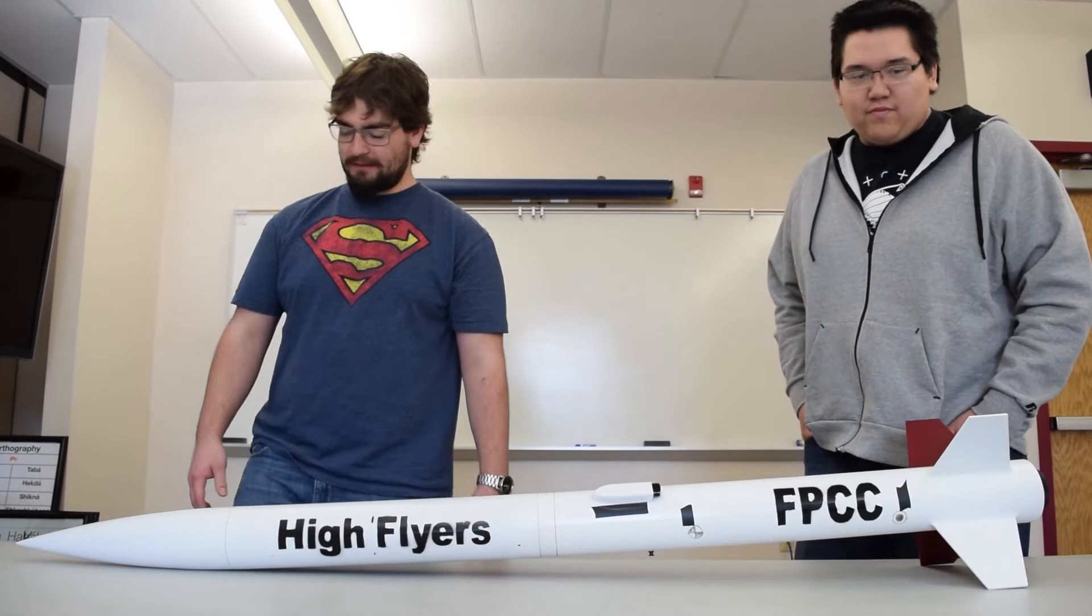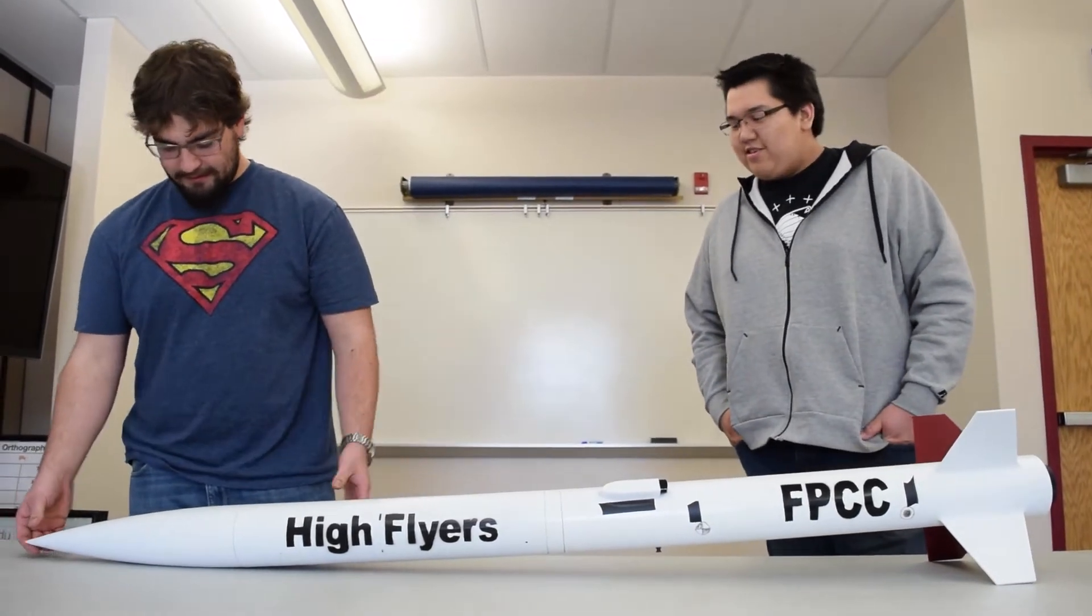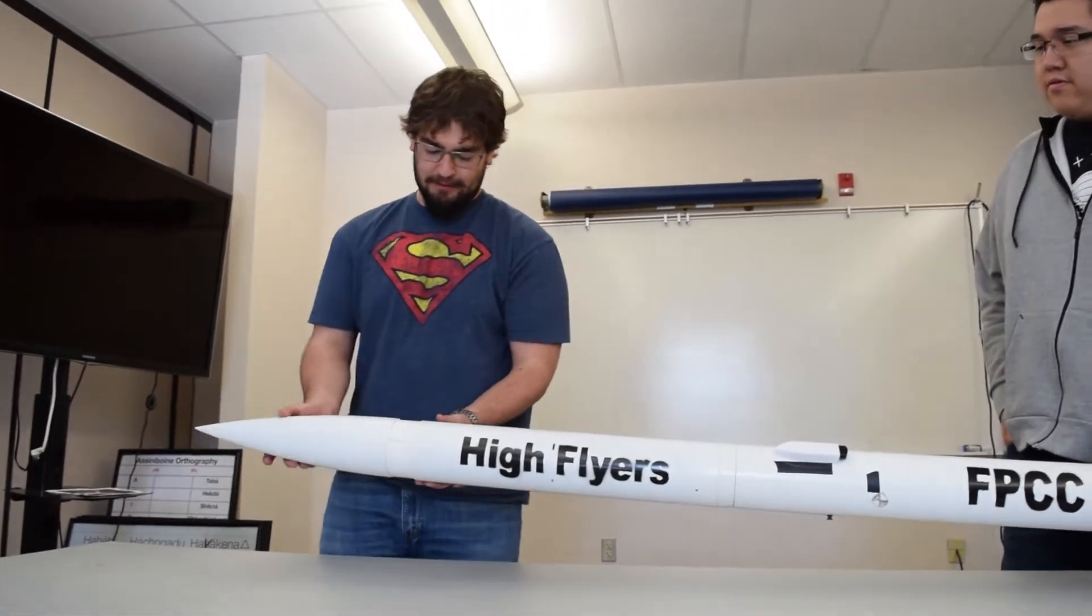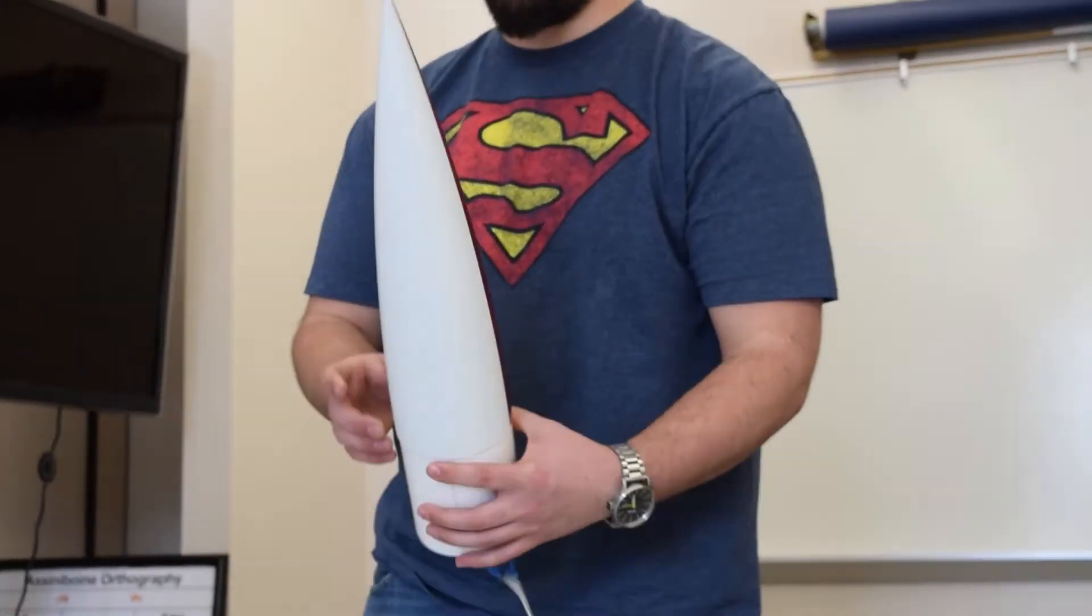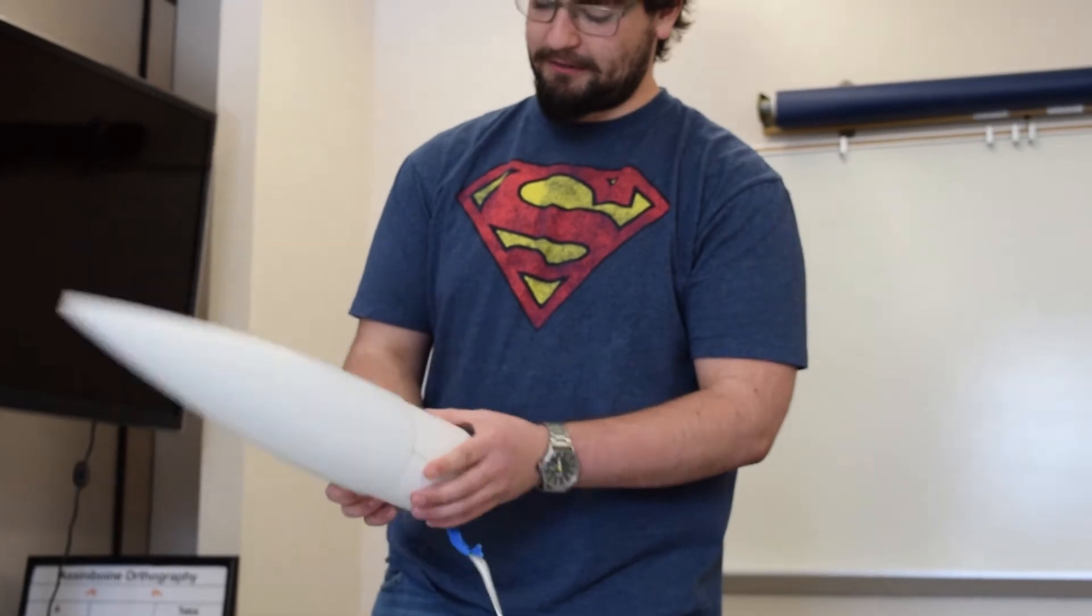We'll just jump right in, start right up at the top here. So this is the nose cone. As you can see, it's painted just like the rest of the rocket.